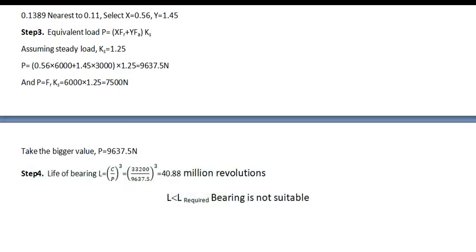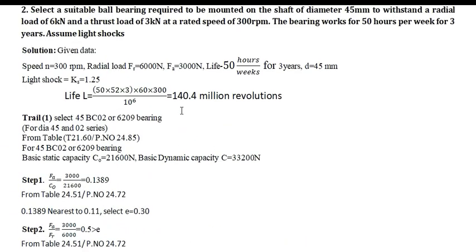And again, you have to go for finding the life. Life of the bearing, this is the formula, L is equal to C divided by P raise to 3. You will obtain is 40.88 million revolution, which is L is less than L required.